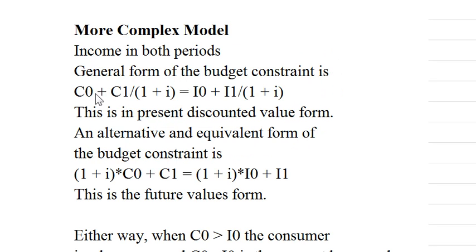We want to complicate the model a little bit and look at the general case. The budget constraint in this case is that the present discounted value of the consumption stream has to equal the present discounted value of the income stream.